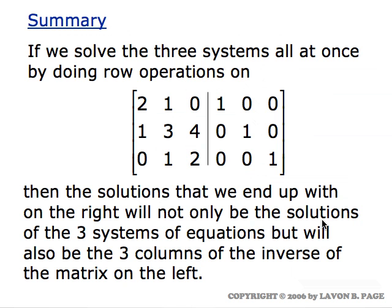Putting it all together: if we solve all three systems at the same time, what we get in each case are the columns of the inverse matrix — first, second, and third. This is exactly a verification of the method we used to find the inverse: perform the row operations and the inverse matrix appears on the right. The way we were doing that is completely consistent with what we now observe about solving multiple systems of equations all at the same time.